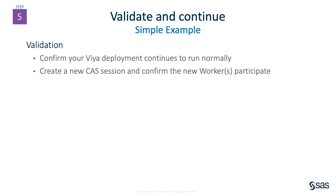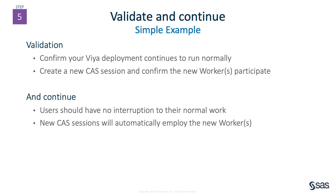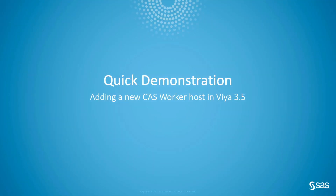Validation of significant changes to the system is always an important step. Test that your Viya deployment is functioning correctly and confirm that the new CAS worker participates in user CAS sessions. Once you're happy the system looks good, you can enjoy the additional processing power that the new CAS workers bring to your system.